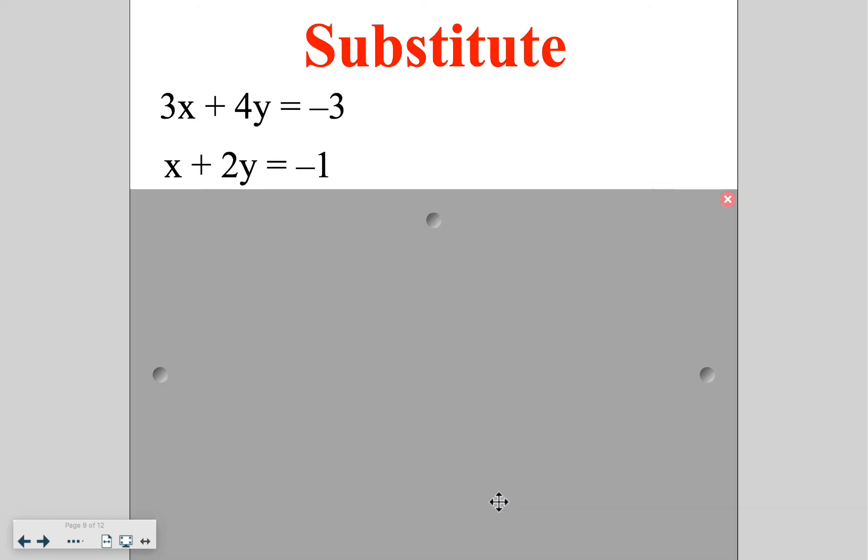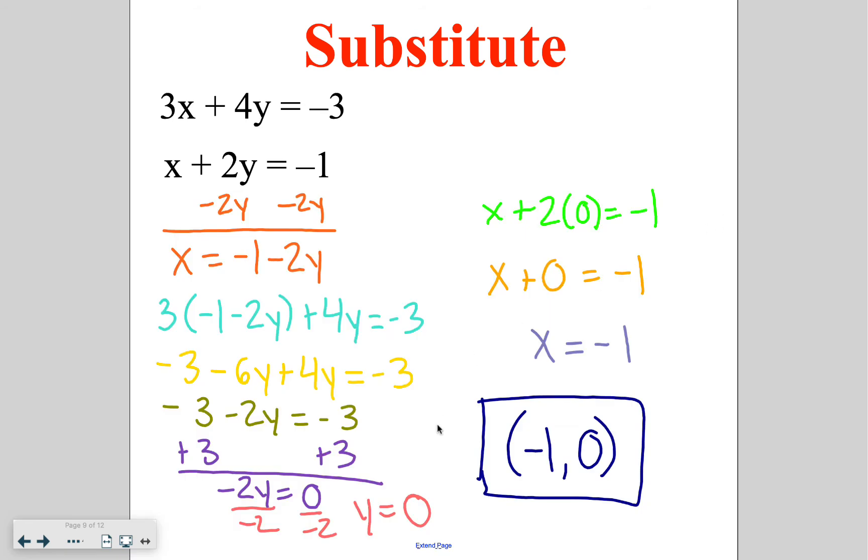Go ahead and try this one on your own. Solving for x this time, that is the easiest variable to get by itself. Doing my distributive property, solving, we find out that y is equal to 0. Plugging that back in, I get that x is equal to negative 1 for a final answer of negative 1, 0.